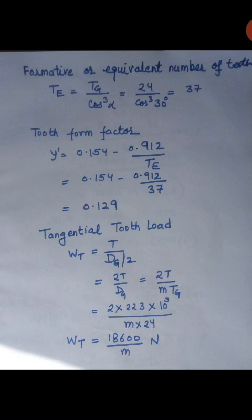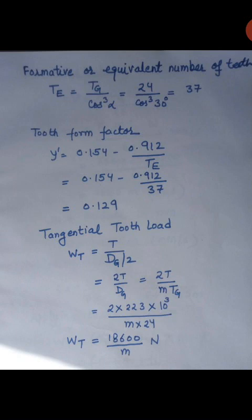Now we will calculate the tooth form factor. The equation is given in the question itself: y dash equal to 0.154 minus 0.912 upon Te. If the equation of tooth form factor is not given in the question, then you have to consult the design data book. In this equation we put the value of Te equal to 37 and we get y dash equal to 0.129.